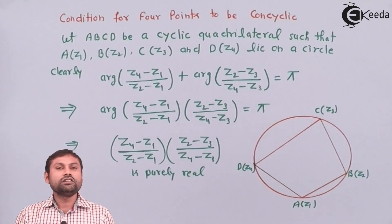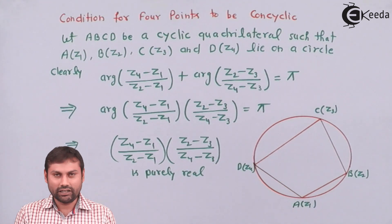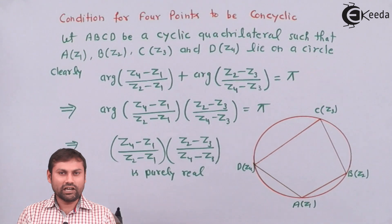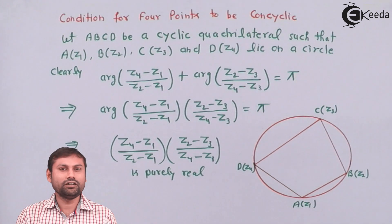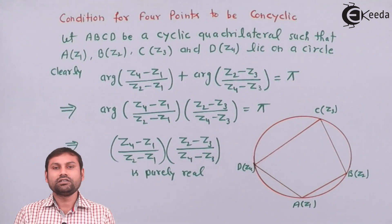Then you can show these four points are concyclic. They lie on a circumference of a cycle. So I hope you guys understand this condition and you will use this condition to show when four points are concyclic. Thank you.